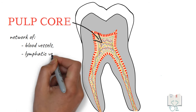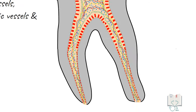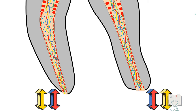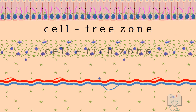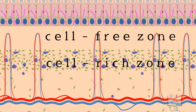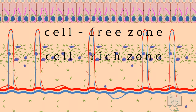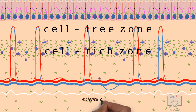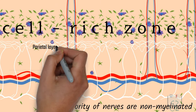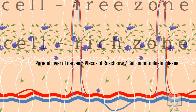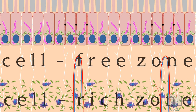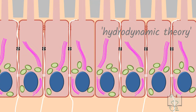Apart from these cells, a network of blood vessels, lymphatic vessels, and nerves is seen in the pulp core — all entering and exiting through the apical foramen. The blood vessels form an extensive capillary network with branches passing into the peripheral layers reaching up to the odontoblasts. The dental pulp is heavily innervated; the majority of nerves are non-myelinated. These nerves form a plexus just beneath the cell-rich zone called the parietal layer of nerves, or plexus of Raschkow, or the subodontoblastic plexus. Nerves from this plexus cross the cell-rich and cell-free zones, extend up to the odontoblastic zone, and may enter dentinal tubules. According to the hydrodynamic theory, it is these nerves which cause dentine sensitivity.